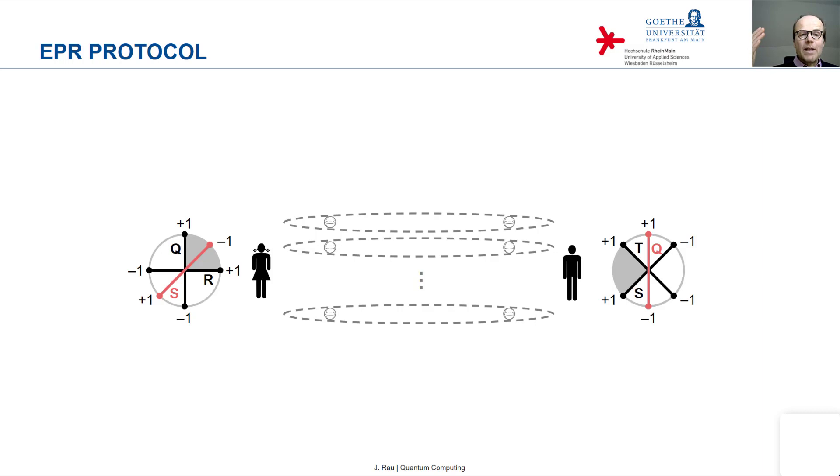So Alice and Bob have, for these measurements, they have the same bit string, the same list of results.